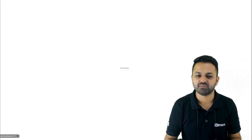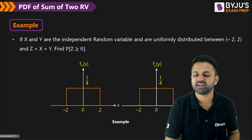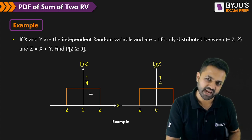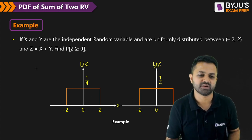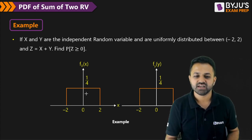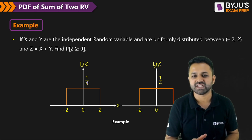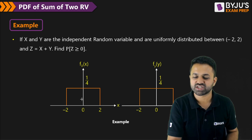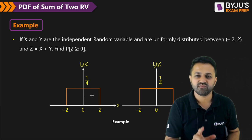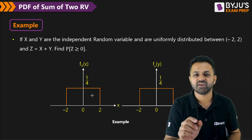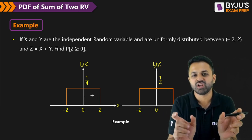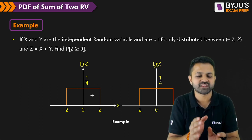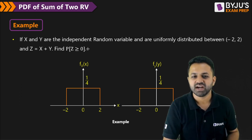To understand this particular theorem, let us have one example. We have two random variables X and Y which are added together to get the new random variable Z. This PDF is uniformly distributed and has a rectangular shape. The trick is: whenever you have two rectangular pulses of equal width, the convolution is nothing but a triangular shape.